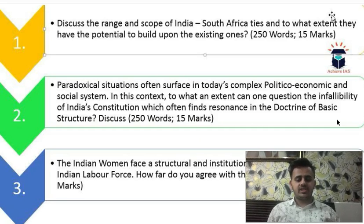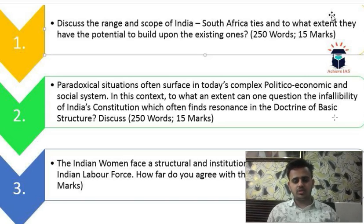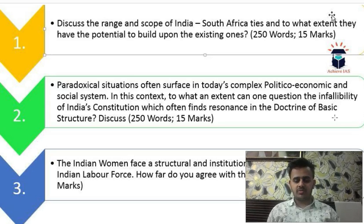The first question is: Discuss the range and scope of India-South Africa ties and to what extent they have the potential to build upon the existing ones. You have to explain the range and scope of India-South Africa ties and the potential for Indo-South Africa relations to grow further. The maximum word limit is 250, and the maximum marks are 15.